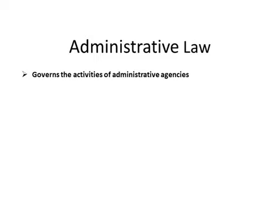Let's first understand what the activities of administrative agencies are. Administrative agencies can be broadly classified into three: the legislative, the executive, and the judiciary. All administrative activities can be covered under these three main heads. The activities of administrative agencies comprise legislation, execution, and adjudication. Administrative agencies can make rules or legislate when delegated to them by the legislature.